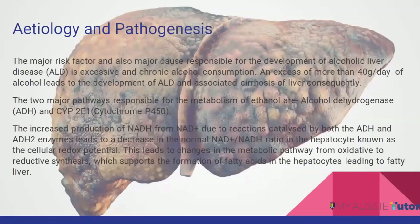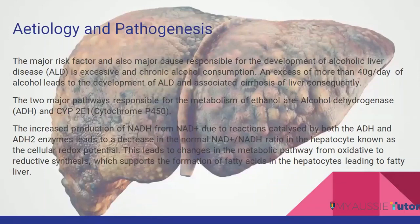What is the etiology and pathogenesis behind the development of alcoholic liver disease? The most common and major risk factor is excessive and chronic alcohol consumption — more than 40 grams per day generally — which leads to the development of ALD and cirrhosis of the liver. There are two major pathways followed: the first is the alcohol dehydrogenase pathway, and the other is the cytochrome P450 pathway. When we consume alcohol, the ethanol is metabolized in the body following these two pathways, each leading to the development of alcoholic liver disease.